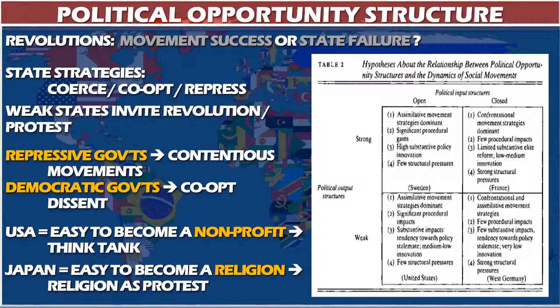When governments are weak, they invite revolution — you can smell the blood in the water. Protest groups become emboldened, realizing they have an opportunity to tip the state. When governments lose wars or can't collect taxes or their finances are stressed, protest groups know they can push and the regime might collapse on its own. There are also differences between repressive authoritarian governments and democratic ones. Repressive governments don't give dissenters an outlet — they can't form a minority party, demonstrate, or influence the legislature — so they become radicalized, more contentious, and may go underground.